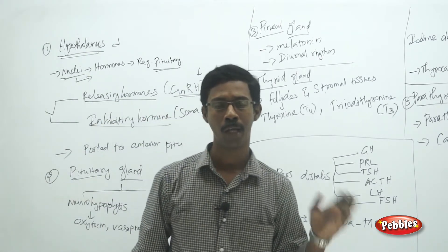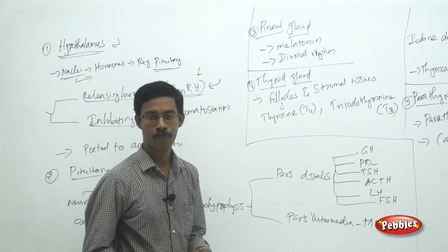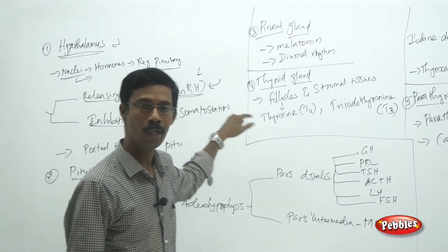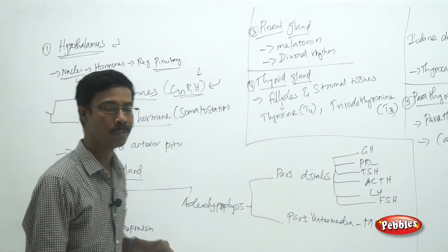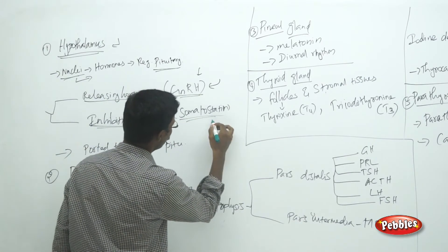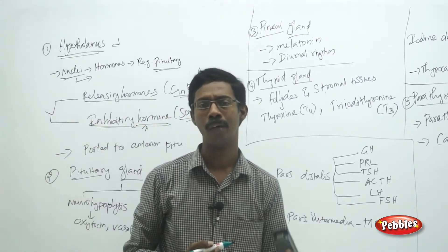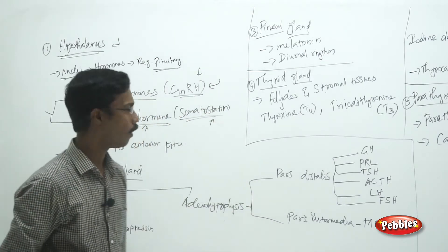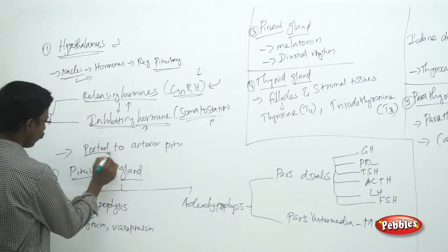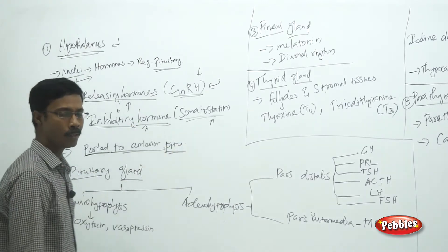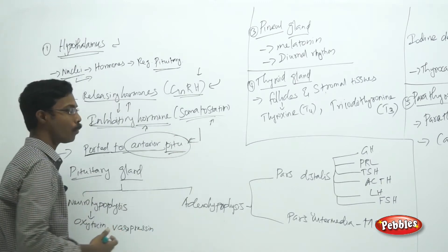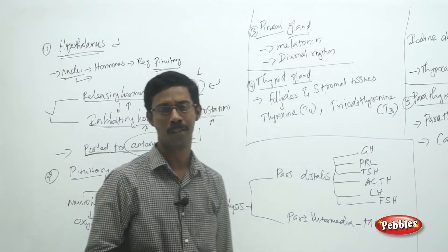Gonadotrophins are hormones produced by the pituitary, but their secretion is regulated by releasing hormones from the hypothalamus. Inhibiting hormones work in reverse — for example, somatostatin inhibits the release of growth hormone from the pituitary. Hormones from the hypothalamus are transported through a canal and stored in the anterior pituitary, while the posterior pituitary is directly controlled by the hypothalamus and central nervous system.